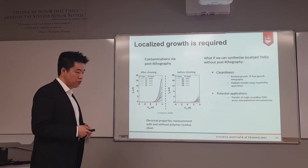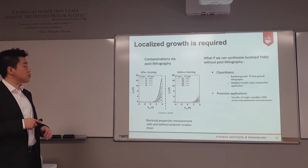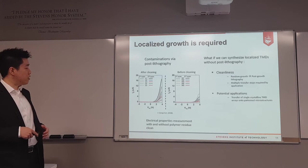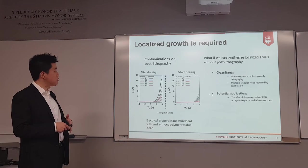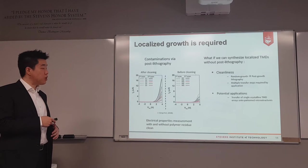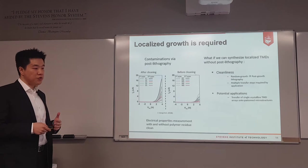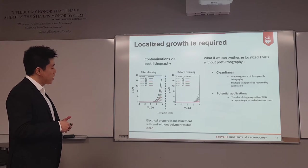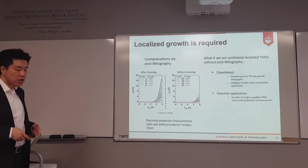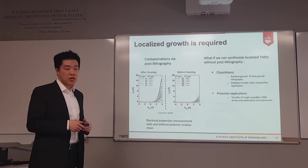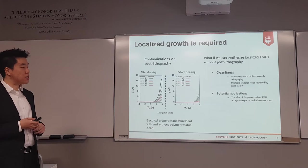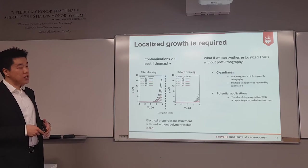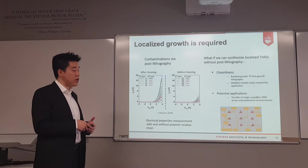The problem with randomly located growth is that we need a post-growth lithography process, which introduces polymer residues. Research shows that before and after deep cleaning of polymer residues, the electrical properties of devices are totally different. So if TMDs grow at random locations, after post-growth patterning you need AFM or deep cleaning to restore pristine electrical properties. The solution is to synthesize TMDs directly at a certain location with a certain size, enabling direct transfer of single crystal arrays onto prefabricated electrode structures.